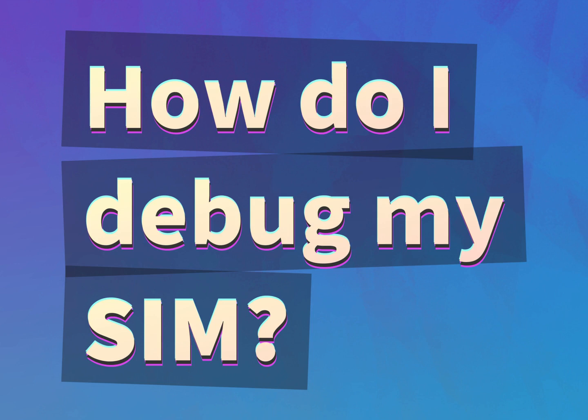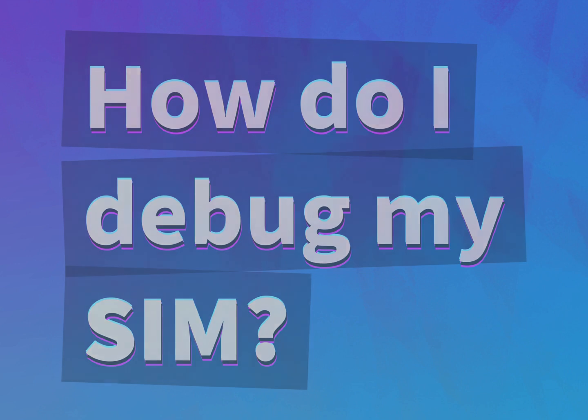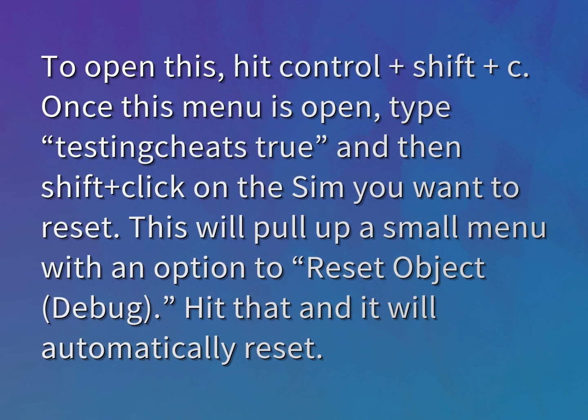How do I debug my SIM? To open this, hit Ctrl plus Shift plus circa. Once this menu is open, type testing cheats true, and then Shift plus click on the SIM you want to reset.